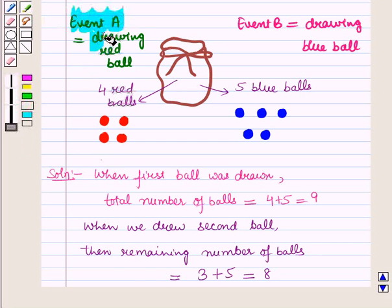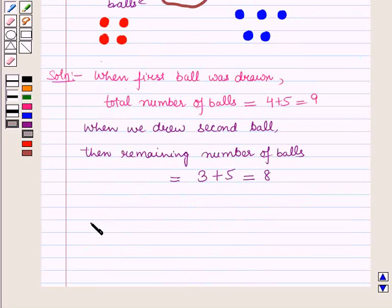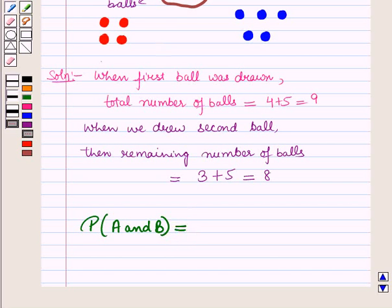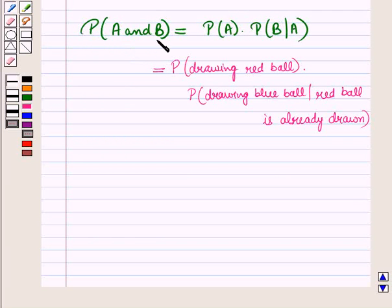Let event A be drawing a red ball and event B be drawing a blue ball. We need to find the probability of event A and B. From the multiplication rule, probability of A and B equals probability of event A multiplied by the conditional probability of event B given that event A occurs, that is, the probability of drawing a red ball multiplied by the conditional probability of drawing a blue ball given that a red ball is already drawn.